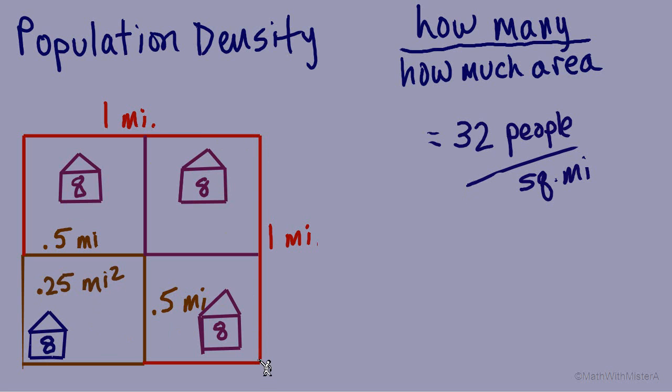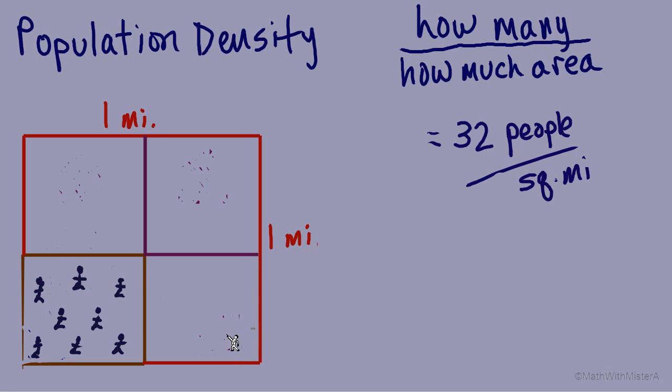We should also understand that when we're calculating population density, we're really saying that the people are all evenly spread out about the land. That's really how we should interpret these calculations. 32 people per square mile is assuming everyone is all spread out. It really doesn't indicate if we have eight people all grouped up in a corner here and another eight grouped up here. The 32 people per square mile is assuming that people are evenly spaced throughout the land. So we have an average people per area when they're all thought to be evenly spread out.